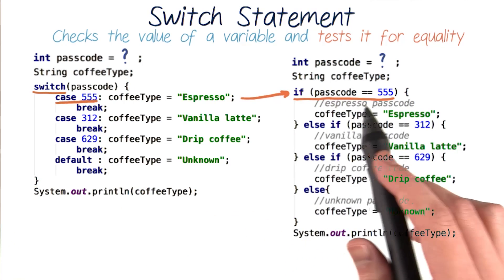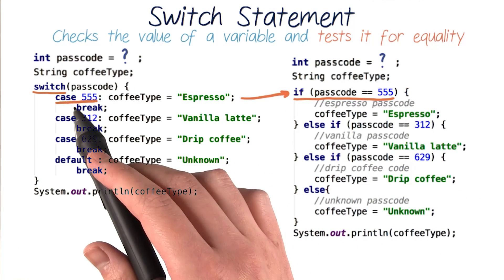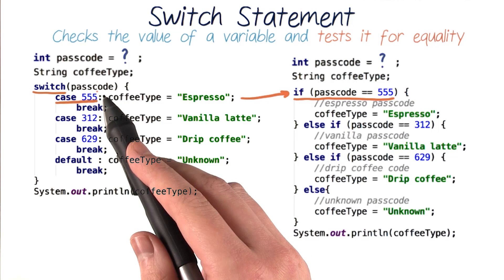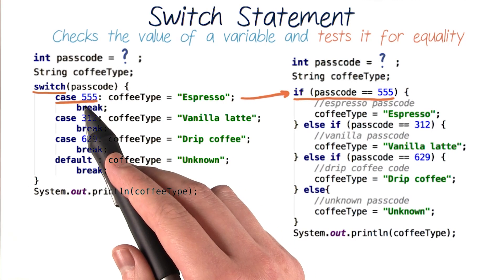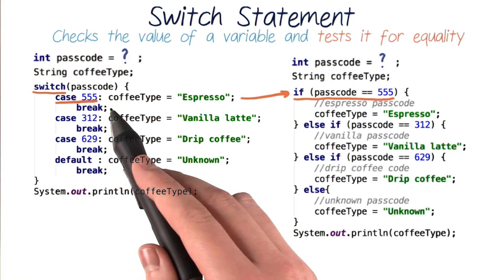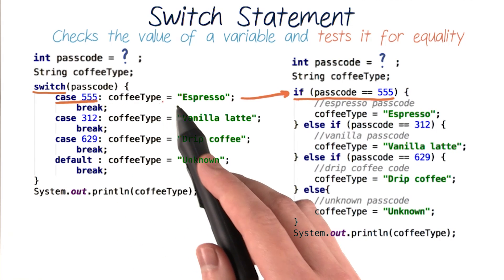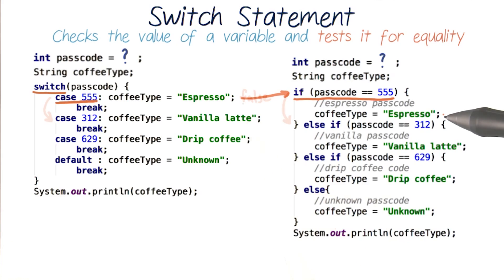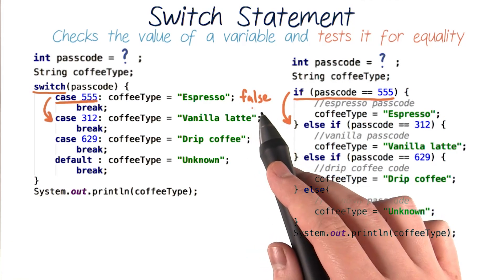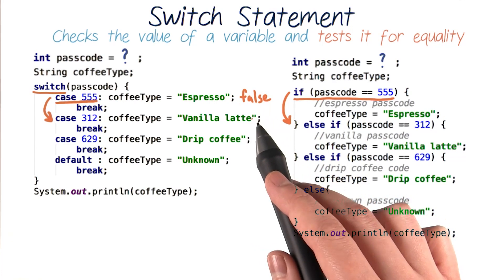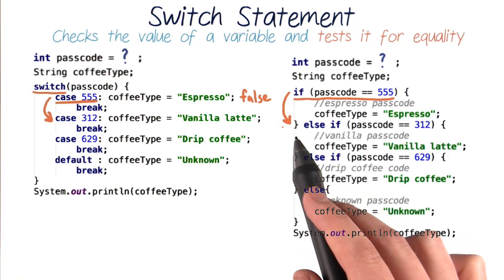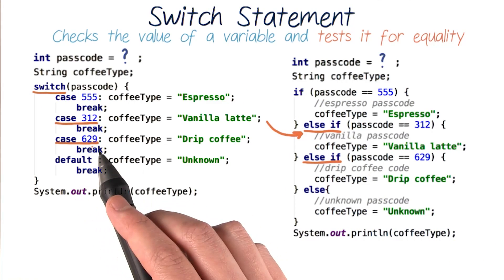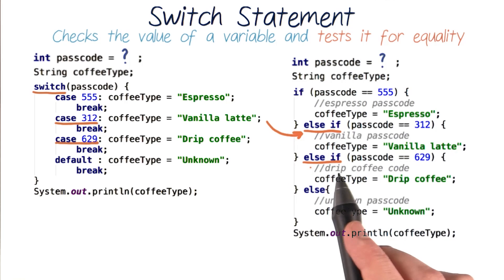Our first if statement here will execute the same code as our case 555 here. The value of our passcode will be checked for equality against the number 555. And if it matches, we'll set our coffeeType string to be equal to espresso. And that's the same thing we did in our first if. But if our passcode is not equal to 555, then we'll move on to our next case, just like we'd move on to our next else if.